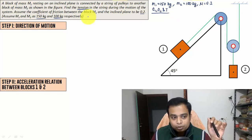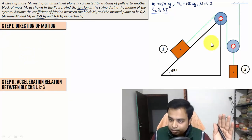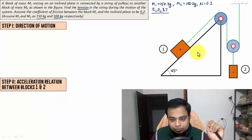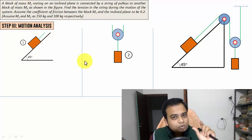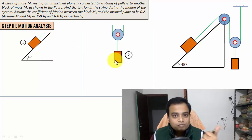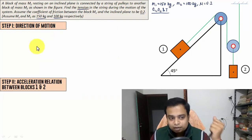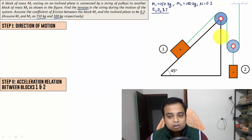We'll divide the solution into three steps. Step one: work out the direction of motion — whether block one goes down the plane or up the plane. If it goes down the plane, block two will move upward, and vice versa. Step two: develop a relationship between the accelerations of block one and block two. Step three: carry out motion analysis using Newton's second law separately for each block. We begin by assuming a static equilibrium case.